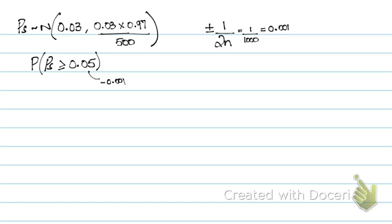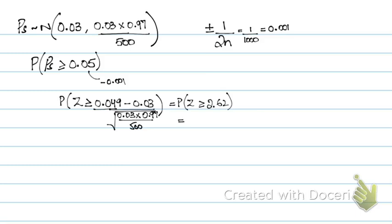This becomes probability of Z greater than or equal to 0.049 minus 0.03 upon 0.03 into 0.97 upon 500. So this becomes probability of Z greater than or equal to 2.62 and this gives you the same result that's 0.0064. So this is how you solve the question using proportions.